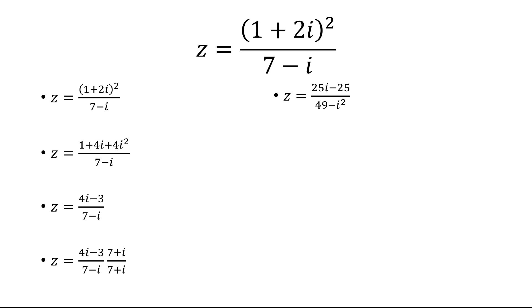When we multiply this, we get 25i minus 25 in the numerator, and 49 minus i squared in the denominator.